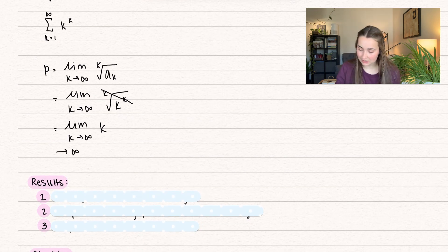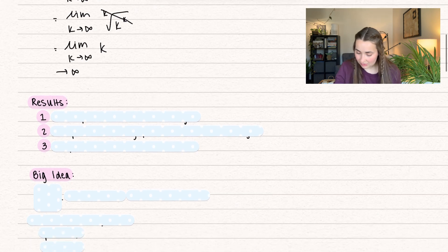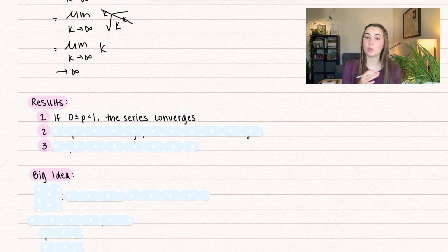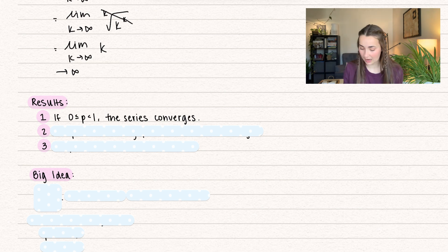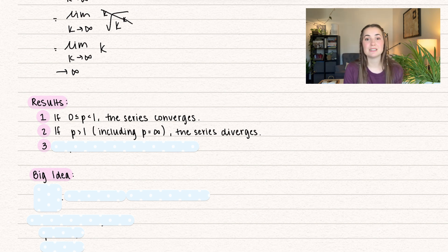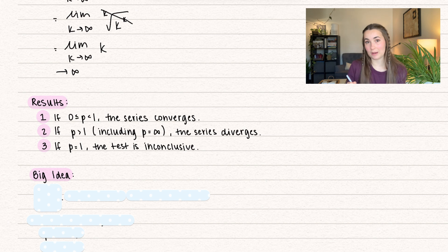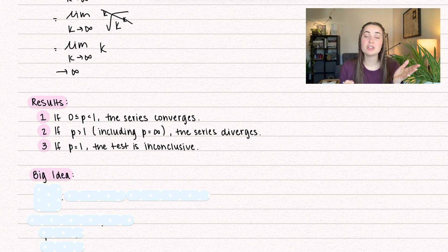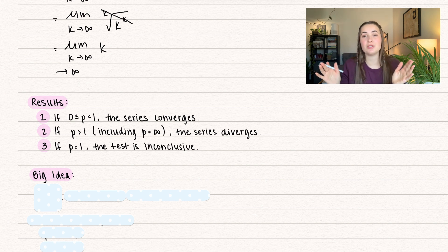Now what does that mean? Let's take a look at the results. If p is between 0 and 1 (and it can equal 0), then the series is going to converge. If p is greater than 1 — and that includes when p diverges to infinity — then the series is going to diverge. When p is equal to 1, the test is inconclusive, because sometimes p equals 1 and the series converges, or p equals 1 and the series diverges, so you have to use a different test.